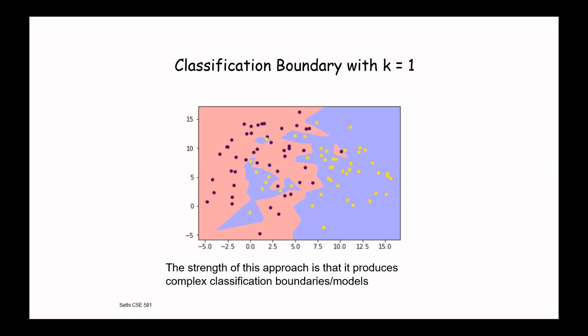To summarize: KNN doesn't require much modeling effort and makes no assumption about the underlying data distribution. The main choice is the value of K. For a two-class problem, use an odd value — K equal to 1, 3, 5, or 7 are reasonable. For a multi-class problem with M classes, use at least M plus one as the value of K.